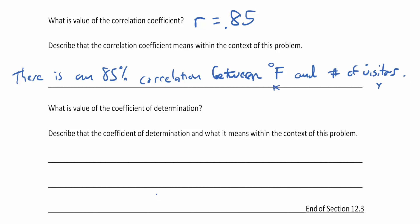That's how you translate the correlation coefficient into context. Now what is the value of the coefficient of determination? We can square this number, or the calculator did so. This is going to be 0.73, and this is always a positive value because squaring a positive or negative number gives you a positive value.